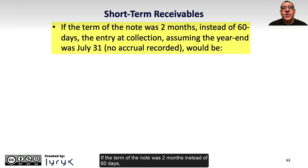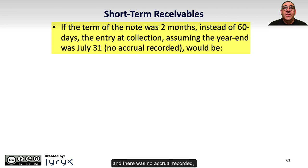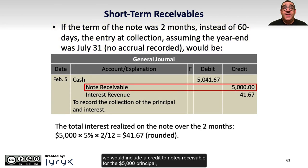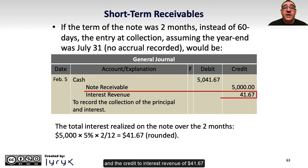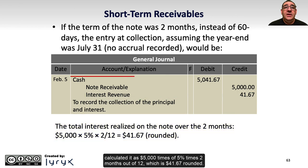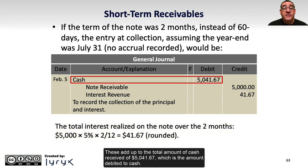If the term of the note was 2 months instead of 60 days, and assuming a year-end of July 31st with no accrual recorded, the entry at collection would include a credit to notes receivable for the $5,000 principal and a credit to interest revenue of $41.67, calculated as $5,000 times 5% times 2 months out of 12, equaling $41.67 rounded. These add up to total cash received of $5,041.67, which is the amount debited to cash.